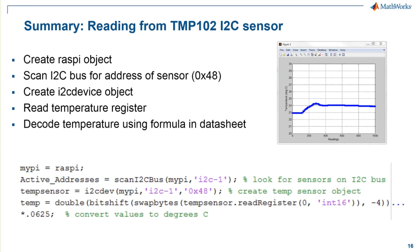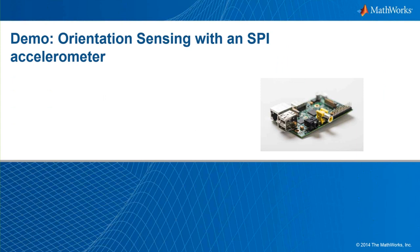To summarize: we demonstrated how to connect a digital I2C sensor to your Raspberry Pi, easily convert the data, and plot the temperature as you acquire it. The workflow is similar for any I2C sensor. In the next demo, we will show how to work with another common type of sensor — a 3-axis accelerometer.